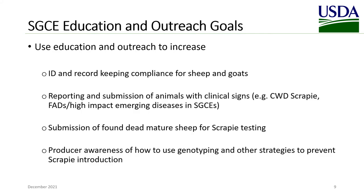Activities for sheep, goat, cervid, and equine education and outreach include using education and outreach to increase and monitor ID and record keeping compliance for sheep and goats, for reporting and submission of animals with clinical signs such as CWD, scrapie, foreign animal diseases, and high impact emerging diseases that are found in sheep, goats, cervids, and equids, to encourage submission of found dead mature sheep for scrapie testing, and to increase producer awareness of how to use genotyping and other strategies to prevent scrapie introduction.